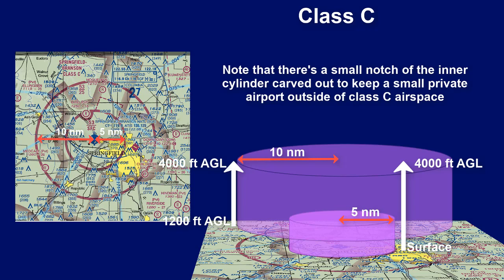Sometimes Class C airspace can vary a bit based on terrain and air traffic factors, which we will illustrate with another example. The inner circle on the chart is the inner cylinder and the outer circle represents the shelf.